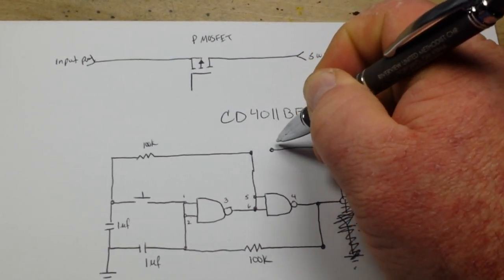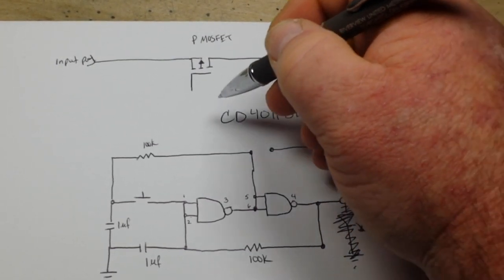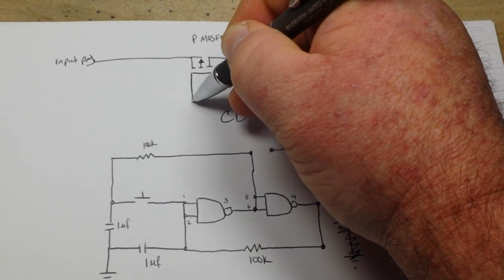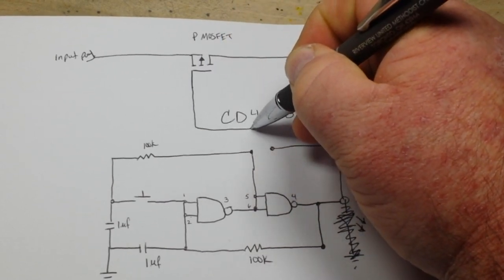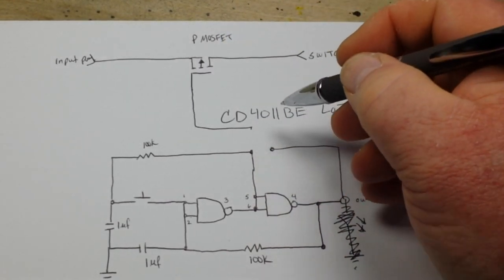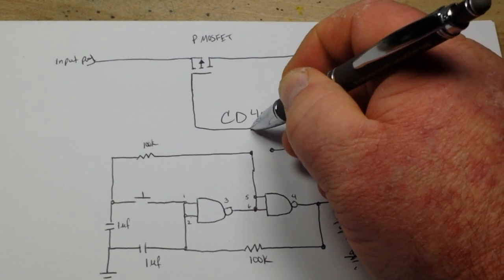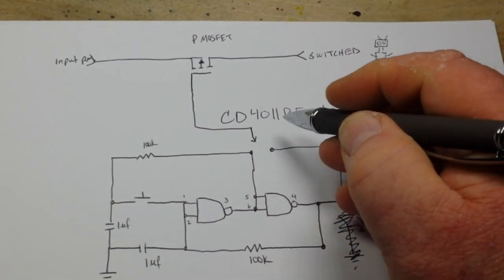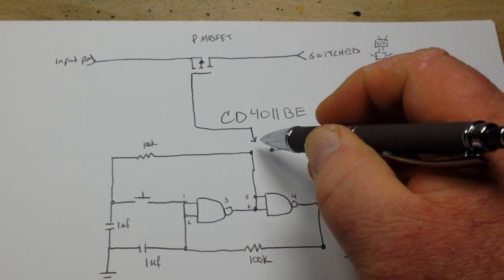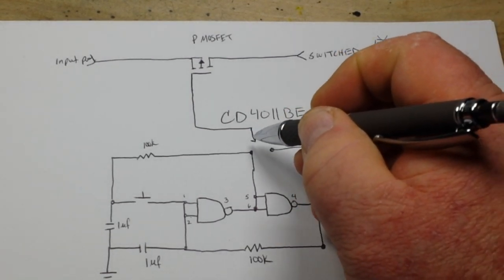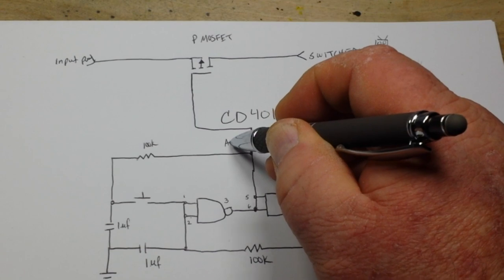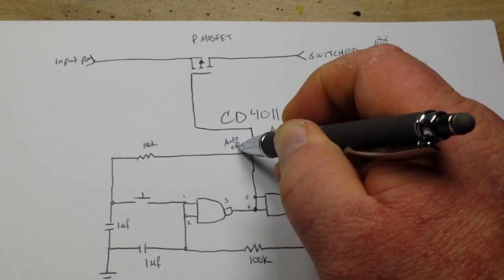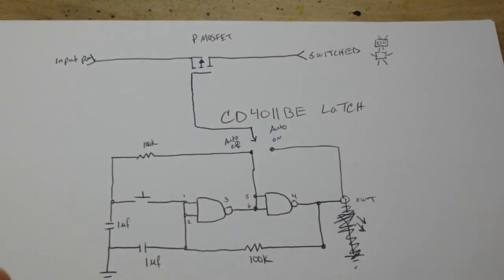If we ignore our LED here and we simply come up to this point right here and we bring the gate of our MOSFET here, what will end up happening is it will act like an automatic switch. One button press and it will go auto on. On the next button press it will go auto off.